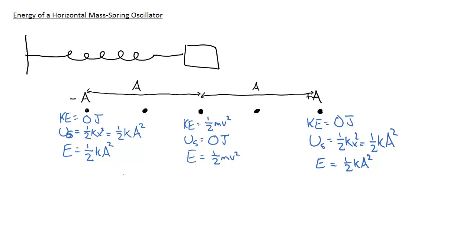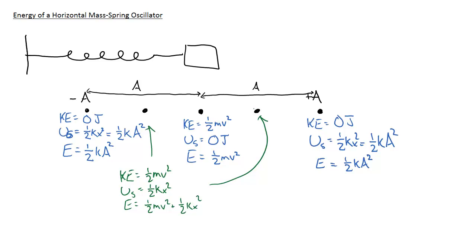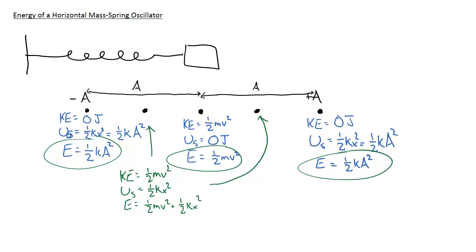For the two middle points that I skipped, the mass is moving at those points, so we have one-half mv squared. We also have spring potential one-half kx squared. The total energy is the combination: one-half mv squared plus one-half kx squared. In between the maximum displacement points and the equilibrium, finding energy is more complex because we must account for both kinetic and spring potential energy. But knowing the total energy from the end points or equilibrium, we can solve for anything needed at those middle points.